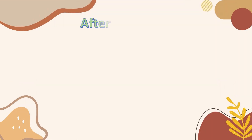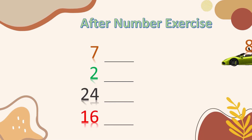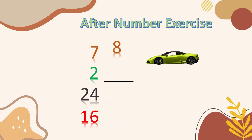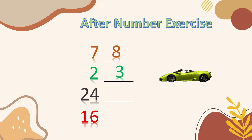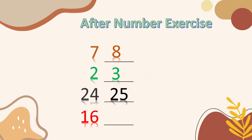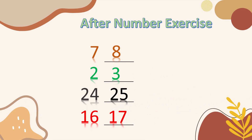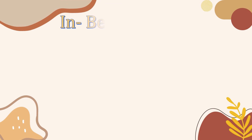Now we will do some more exercise. What comes after 7? What comes after 2? What comes after 24? What comes after 16? After 7 is 8, after 2 is 3, after 24 is 25, after 16 is 17. Hope you understand after numbers.